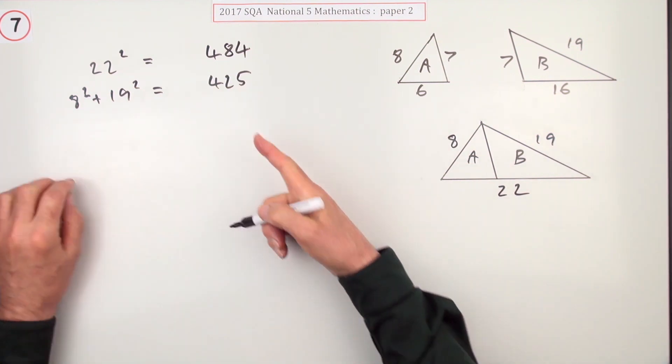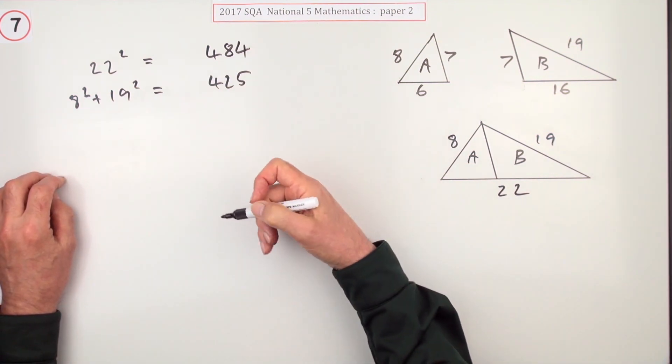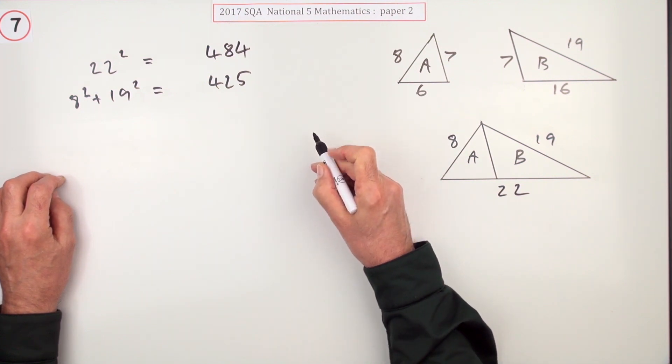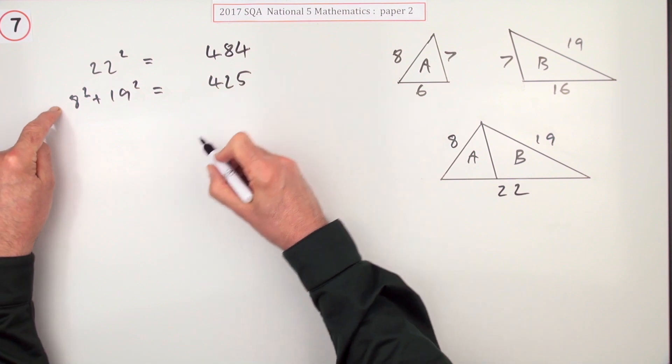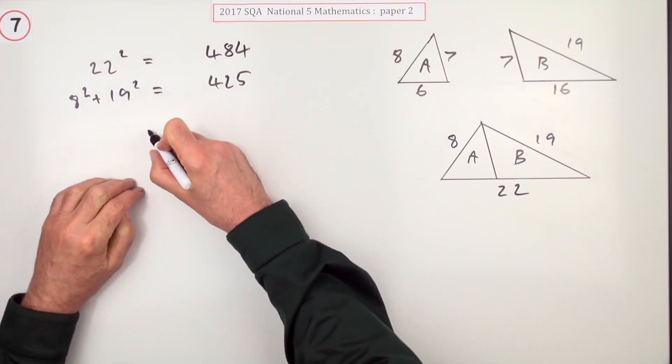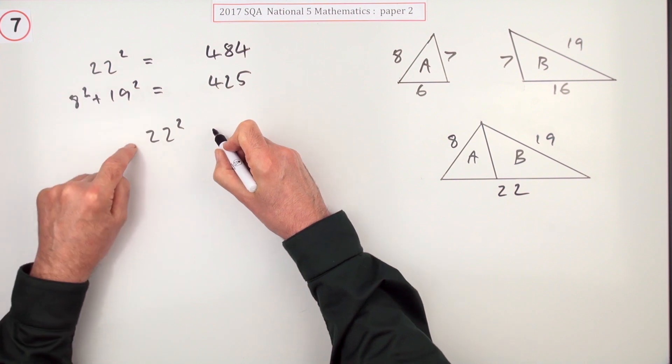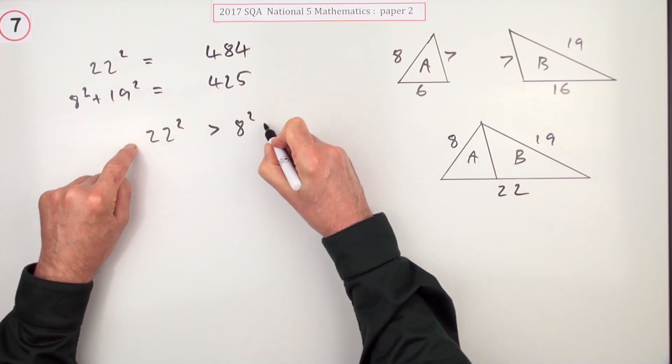Now the comparison. You could write 484 is greater than 425, but essentially those numbers are being compared. Really, to compare these two, I've got them evaluated already. The essential statement is 22² was bigger than 8² plus 19².